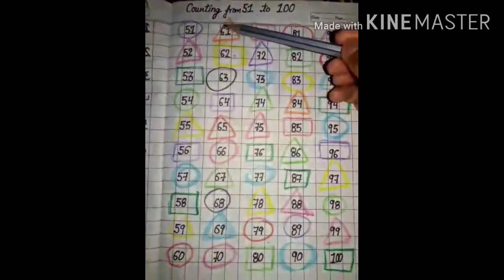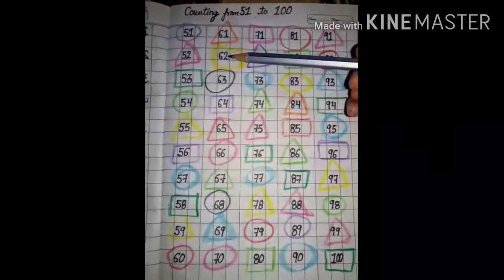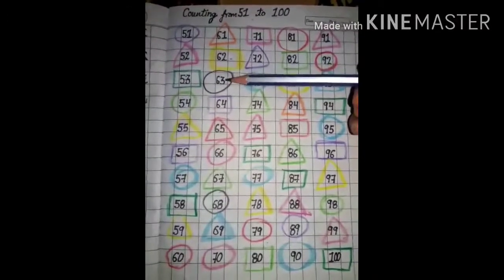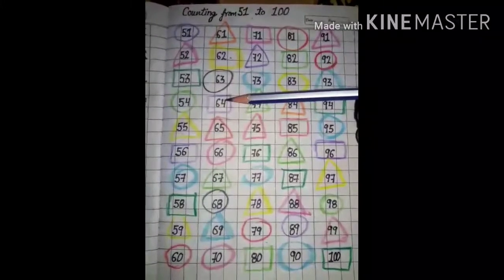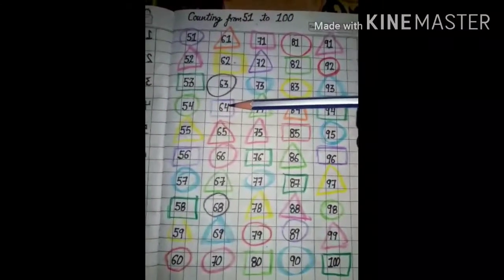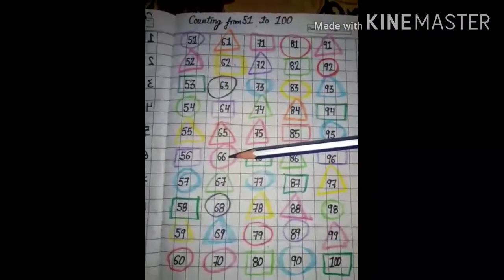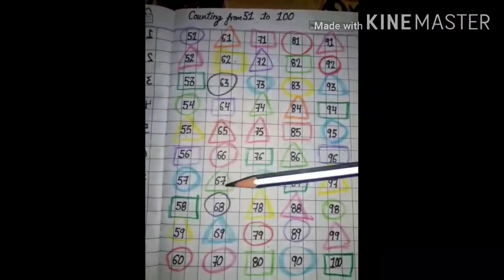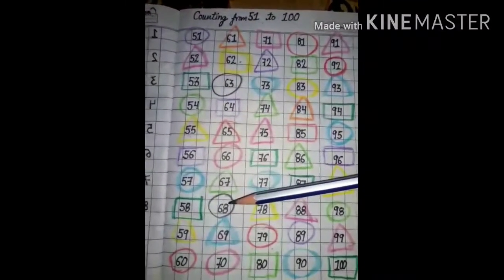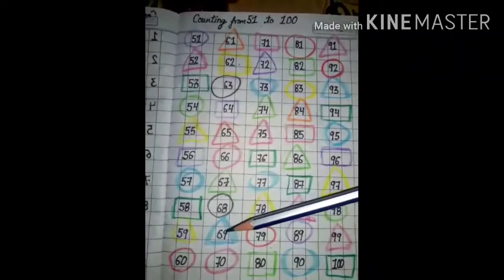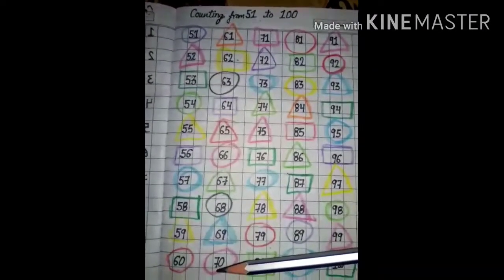Now 61, 62, 63, 64, 65, 66, 67, 68, 69, 70.